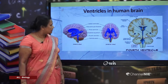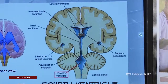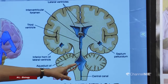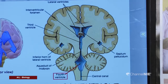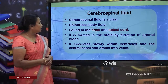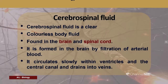In a cross-section through the brain you can see the lateral ventricles, the third ventricle, and the fourth ventricle — this is the arrangement of ventricles within the brain. The ventricles are filled with cerebrospinal fluid — a clear, colorless body fluid found in the brain and spinal cord, formed by filtration of arterial blood.